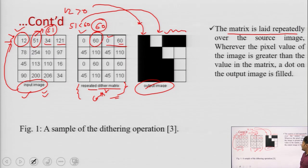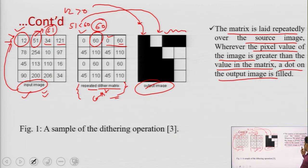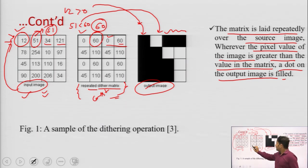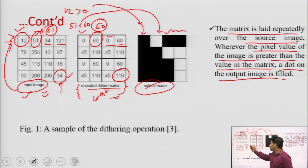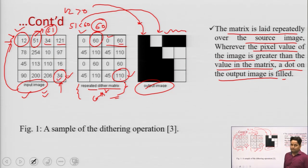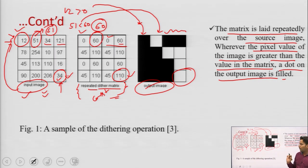The matrix is laid repeatedly over the source image. Wherever the pixel value of the image is greater than the value in the matrix, a dot in the output image is filled; otherwise it is unfilled. For example, this portion has the value 34 and in the dithering matrix it has the value 110 — you always choose the corresponding pixel. Since 34 is lesser than 110, this pixel is completely unfilled. That is all about the dithering process in digital halftoning.